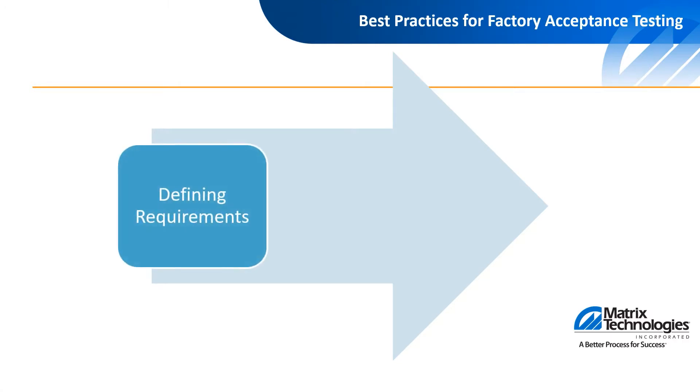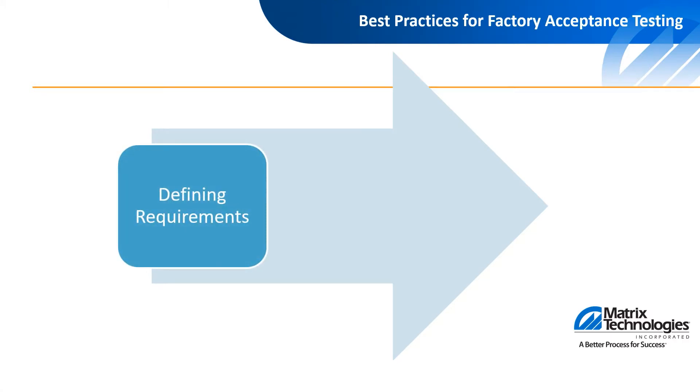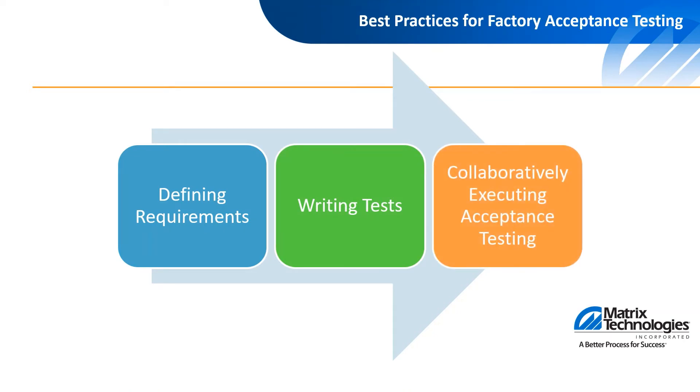When writing code for a software automated system, it's necessary to demonstrate that that code meets the stakeholder's specifications and their goals. A factory acceptance test ensures the quality and success of a project no matter the scope. There are a few steps to this process: defining or confirming the requirements of the project, writing tests that demonstrate that the software or system meets these requirements, and stakeholder and project team collaboration for participating in the acceptance testing. Following this process is essential for minimizing downtime and ensuring the success of a startup.